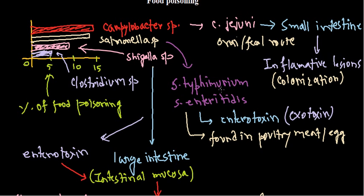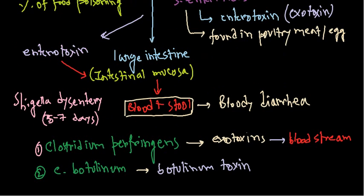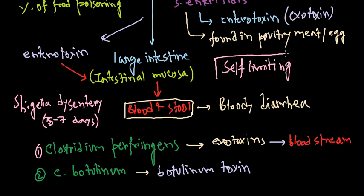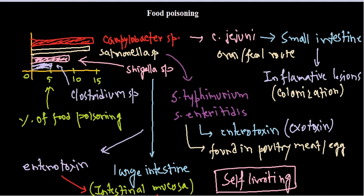Most of these food poisoning infections are self-limiting, meaning they resolve on their own — except for botulinum toxin poisoning. In most cases we don't need to administer antibiotics, but if the condition is more severe, antibiotics may be taken to eliminate the causative microorganisms. That covers food poisoning — I hope that was helpful, thank you.